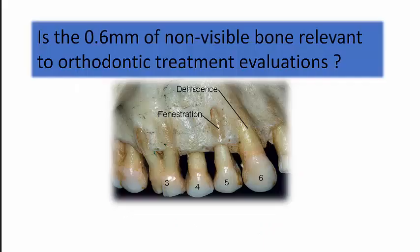The question really comes down to: is the 0.6 millimeters of non-visible bone relevant to orthodontic treatment evaluations? In other words, can you diagnose orthodontically induced dehiscence and fenestration using a cone beam CT? For the purpose of this talk, we'll assume that the 0.6 millimeters of non-visible bone is accurate.